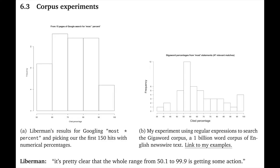Lieberman began with a corpus study using the web. He simply searched for most star percent, where the star is a wild card that search engines like Google will fill in with a word or perhaps a short phrase. And this histogram here shows his results aggregated, and you can see that, as Lieberman says, it's pretty clear that the whole range from 50.1 to 99.9 is getting some action.